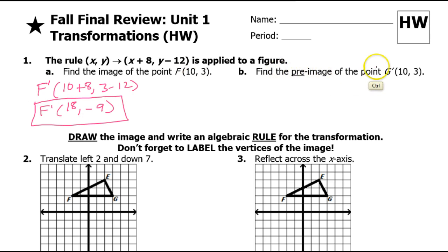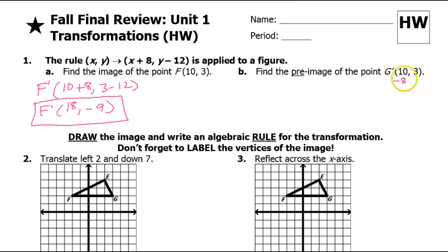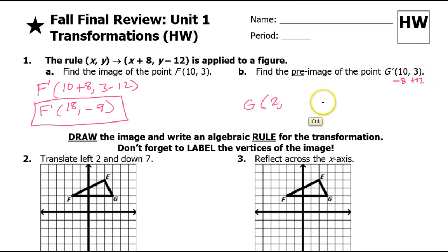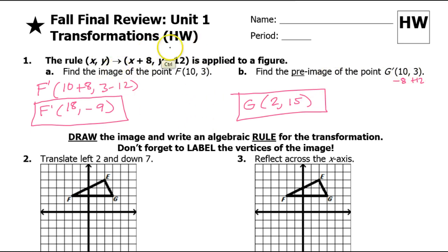On the other hand, if I want to find the pre-image, they're basically giving us the answer and asking what x and y must have been — we're working backwards, doing the opposite of both things. This 10 came from x plus 8, so to undo that we do minus 8. This 3 came from y minus 12, so to fix that we do plus 12. That tells me the original point, the pre-image g, must have been 2 comma 15. You could check by applying the rule and confirming you get 10, 3. So if they say pre-image, do the opposite of the rule; if they say image, just do the rule.